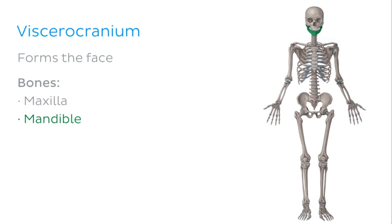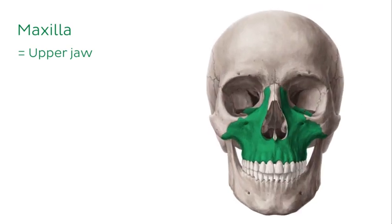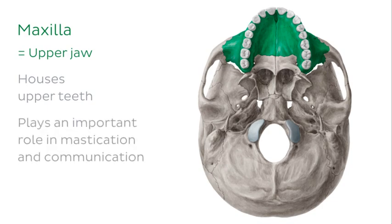These are not the only bones that make up the face — there are several more, and our tutorial on the bones of the head and neck is available on our website. The maxilla is a vital bone of the face, also known as the upper jaw. It contributes to the formation of the orbit, the nose and the palate. Viewing it from below, we can see that it also houses the upper teeth and therefore plays an important role in mastication and communication.